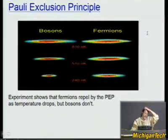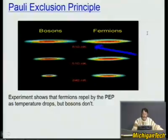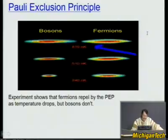One experiment involves cooling bunches of bosons and fermions to nano-Kelvin temperatures. You can make a Bose-Einstein condensate — lots of bosons in the same state. You can't make a fermion condensate. Experiments clearly show that fermions repel by the Pauli exclusion principle as temperature drops, but bosons don't.